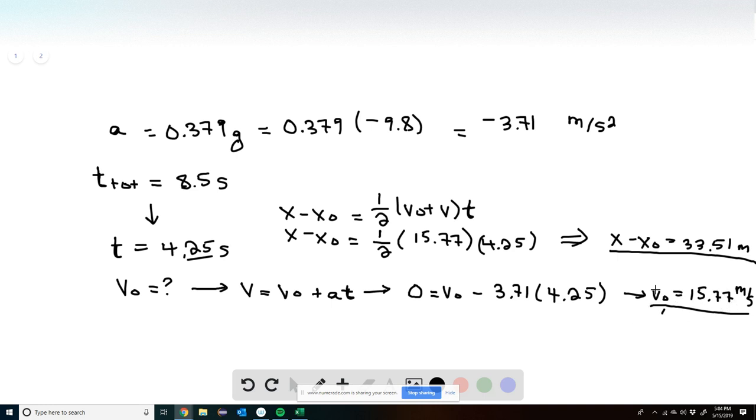Now that we know what V0 is, we can use this kinematic equation to determine what the distance traveled on the ascent is. So we get x minus x0 is equal to one half. Since V is 0 at the top, this is equal to 0. So we just have V0, which is 15.77, and then T is still 4.25. This gives a value of x minus x0 equal to 33.51 meters.